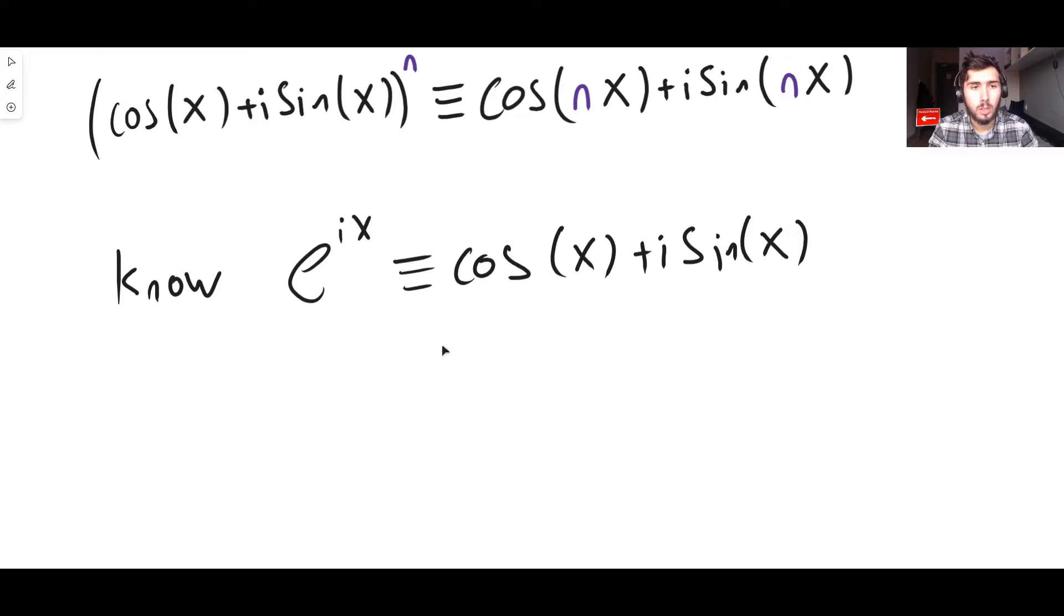Essentially, all we want to do is we want to know what happens when we raise this guy on the right-hand side to the power of n. That's all we want to do. So using Euler's identity, we can just raise both sides to the power of n. So we get cos x plus i sine x, all raised to the power of n, is equal to e to the power of i x, also raised to the power of n, just like that.